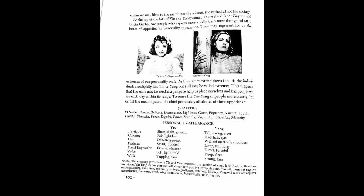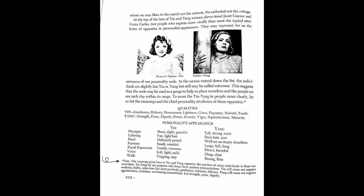On page nine we're met with the first look at how yin and yang can be identified in women. She lists the essence qualities, personality traits, and physical attributes as they pertain to the two extremes. Yin being short, graceful, delicate, small, rounded, youthful, and soft; and yang being tall, strong, direct, firm, sophisticated, and mature. She makes a very important note that yin and yang will always have positive interpretations.